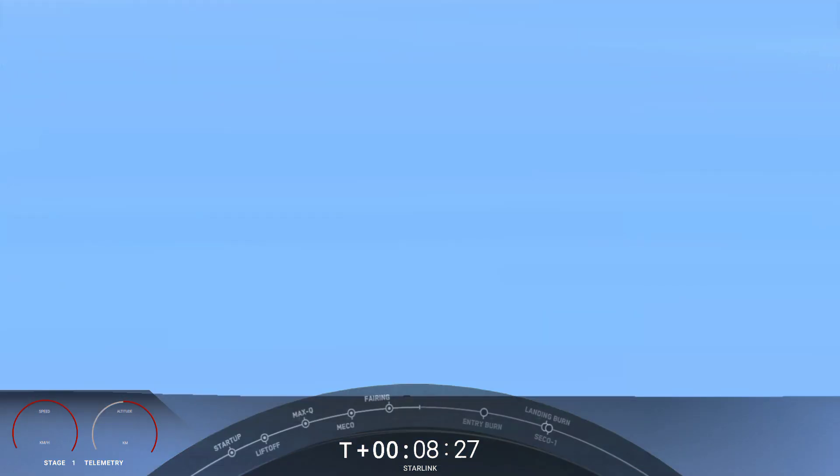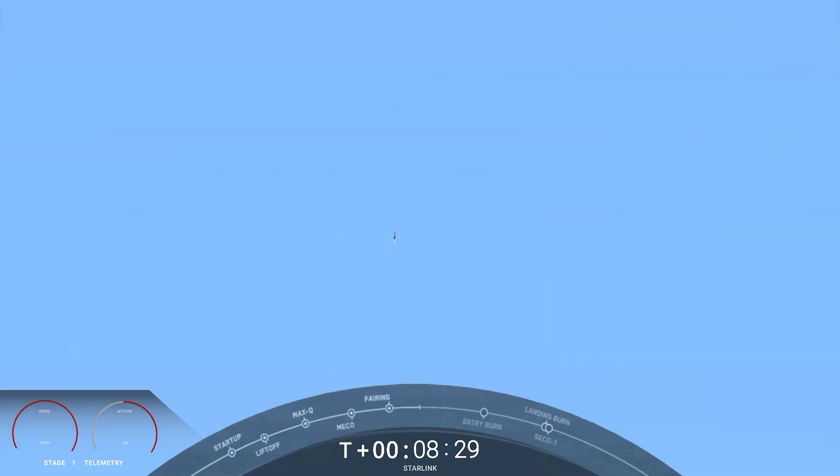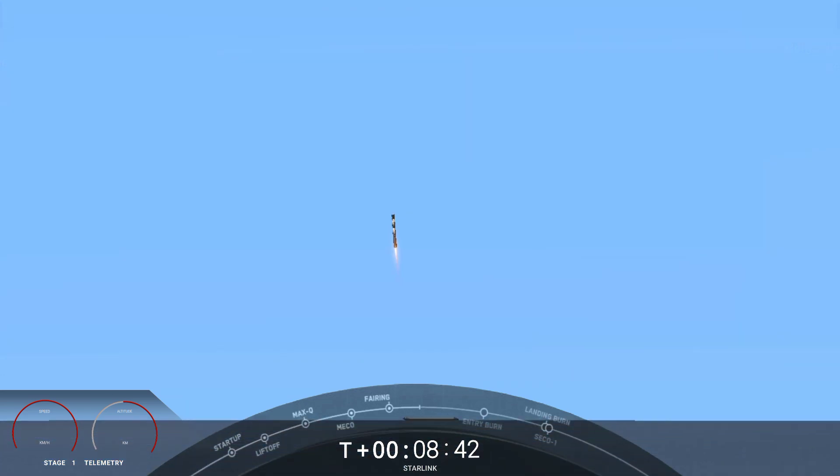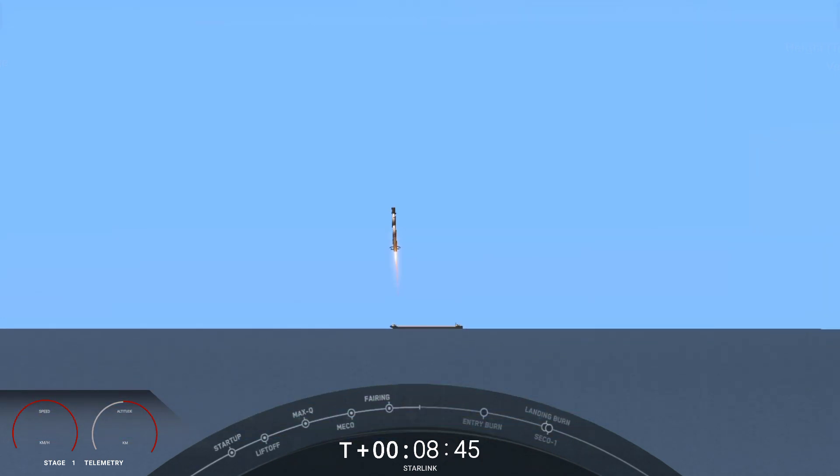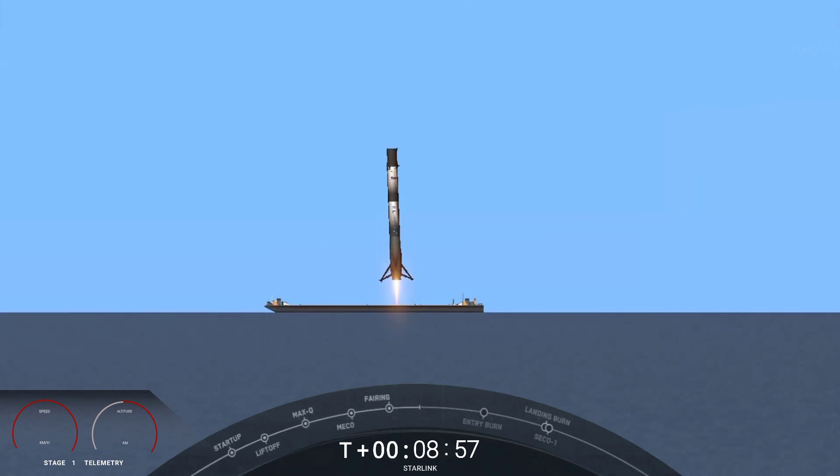Here's a view of our drone ship. We just heard the callout that the stage one landing burn has started. If we are successful, this will be the fourth time that this booster has successfully landed. Stage one landing leg deploy. We did get the landing legs deployed. And there it is. Stage one landing confirmed. Right in the middle of our drone ship. That is a successful first stage landing, the fourth for this particular first stage booster.